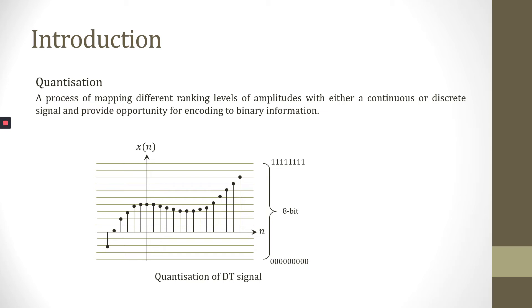Quantization is a process of mapping different ranking levels of amplitudes with either a continuous or discrete signal and provides opportunity for encoding to binary digital signal. This process is also known as analog to digital conversion, A to D, and it loses information by truncating or rounding the sample values.